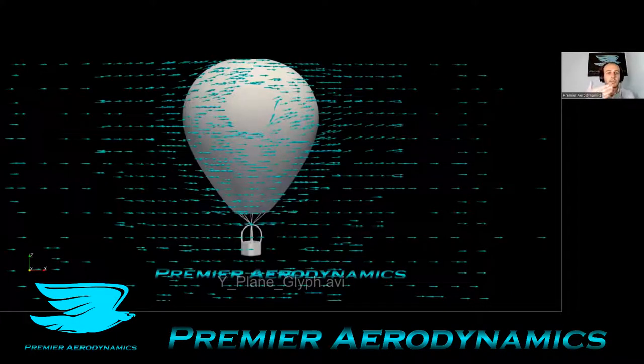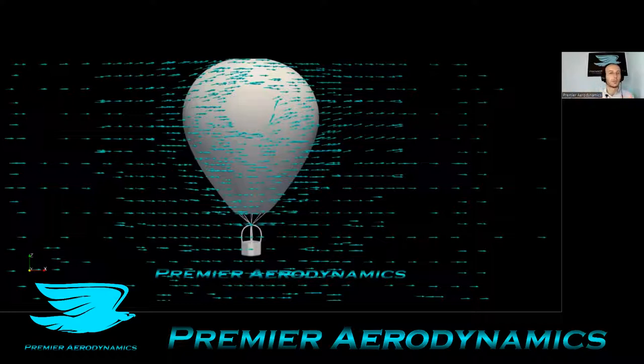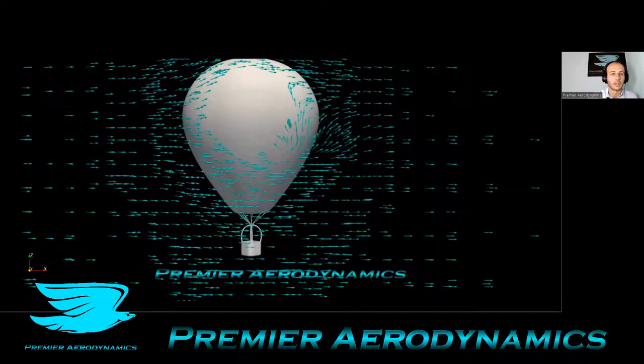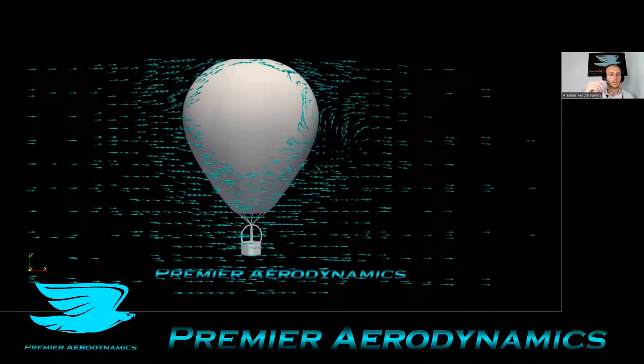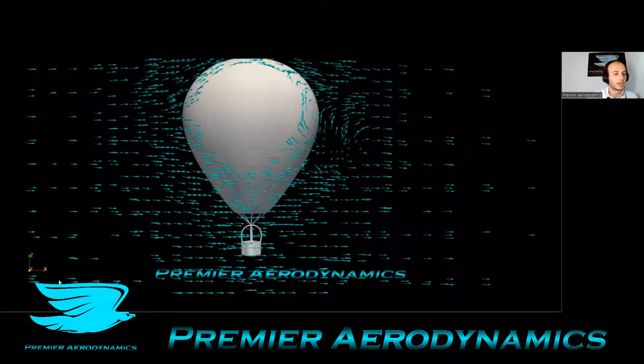And this is a glyph, so this is the Y plane going through the balloon and the flow is going from left to right, and these arrows show the direction of the flow. So as we progress along, you can see all these arrows starting to swirl up and change shape and direction, particularly in the wake here.